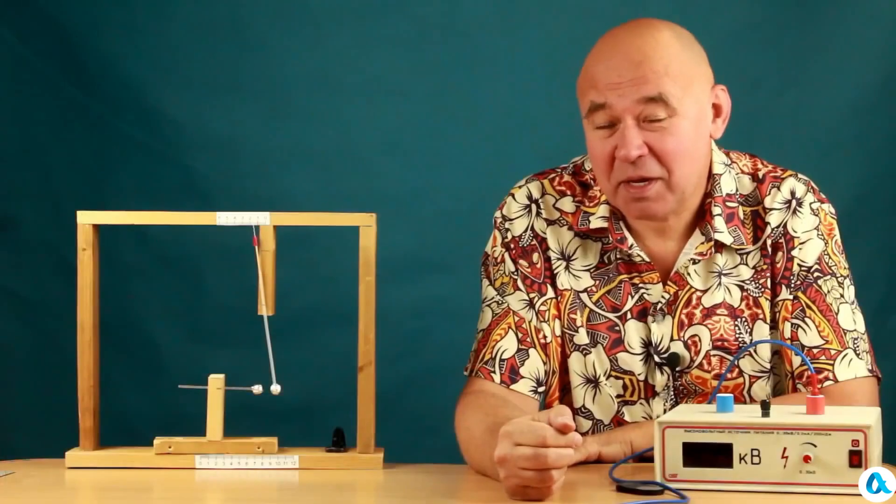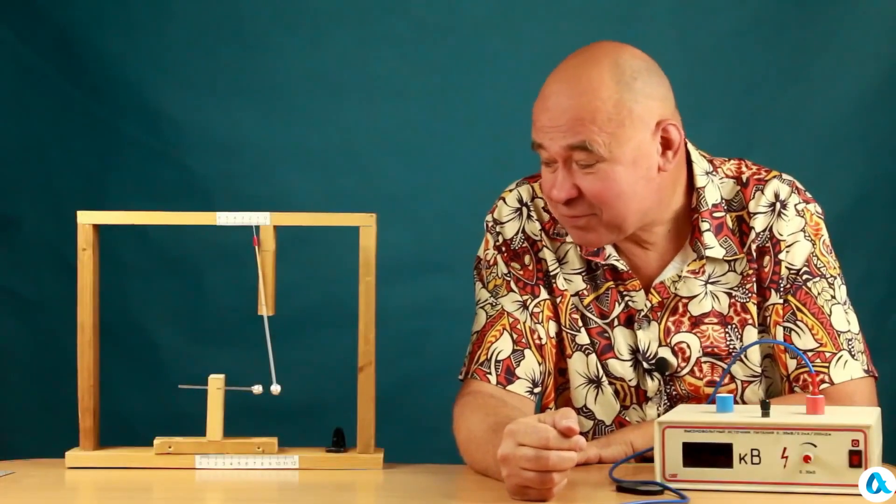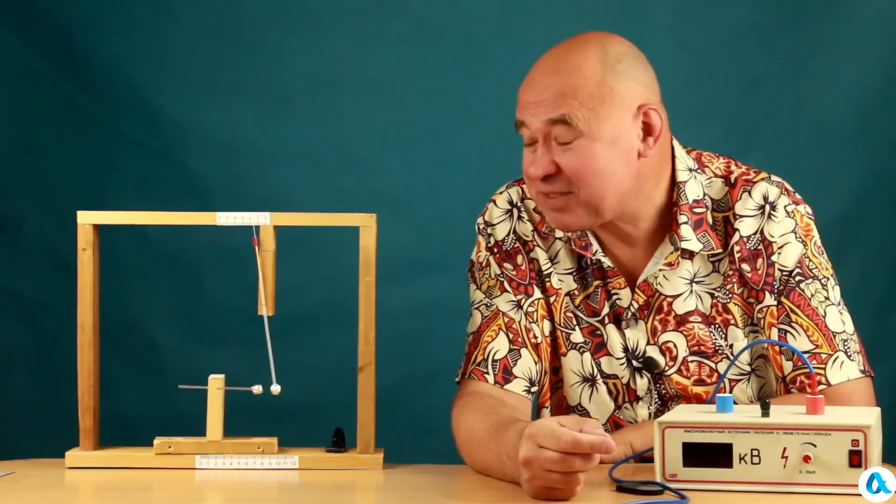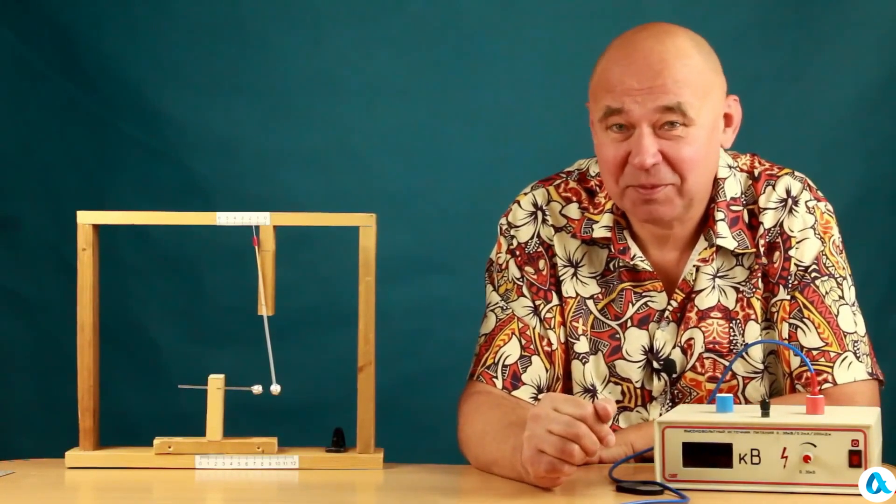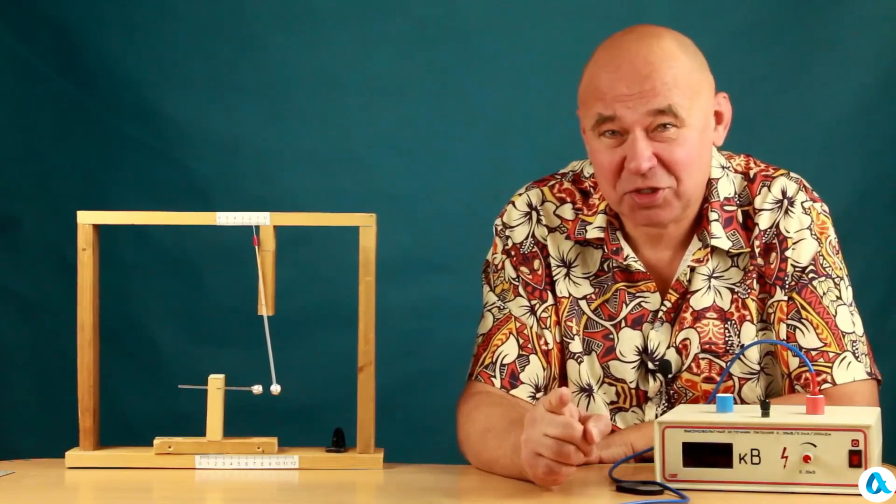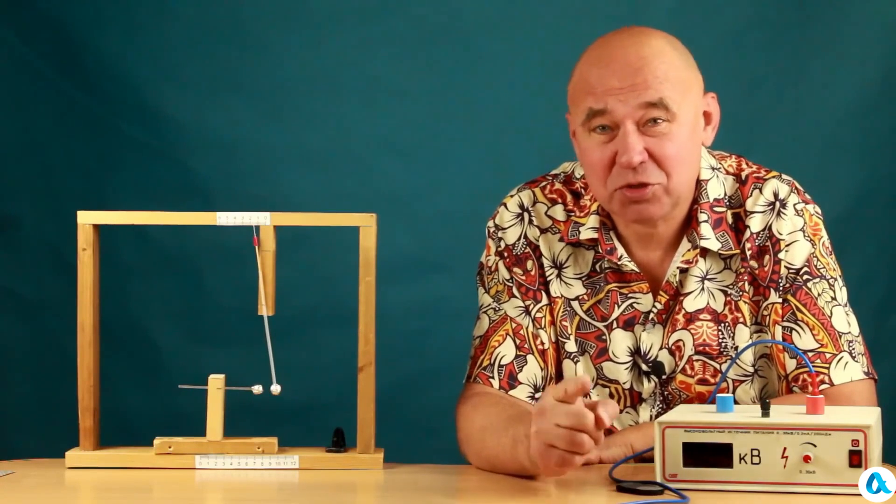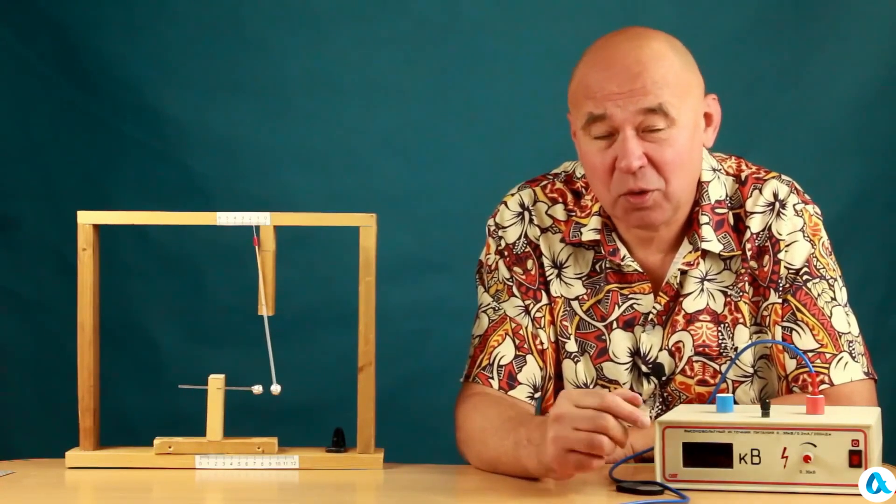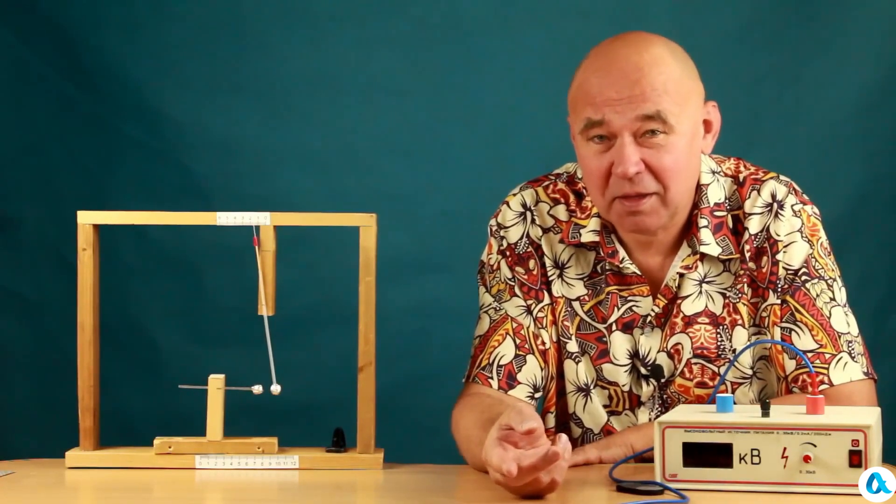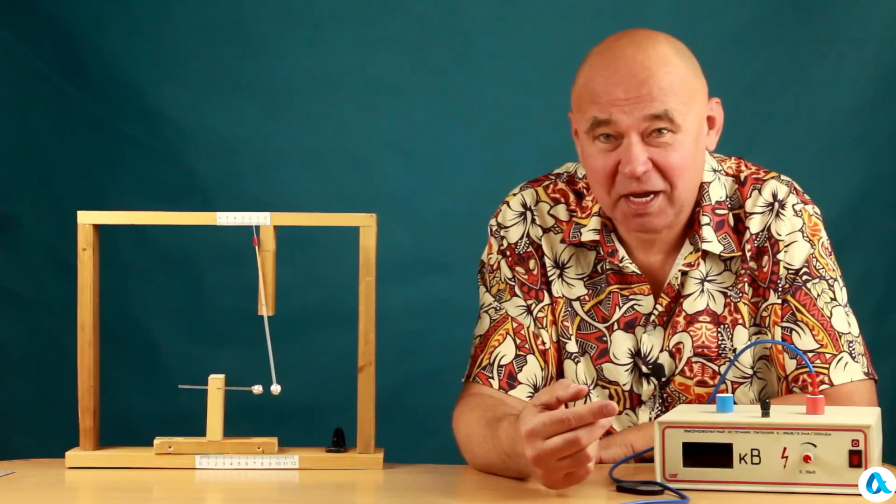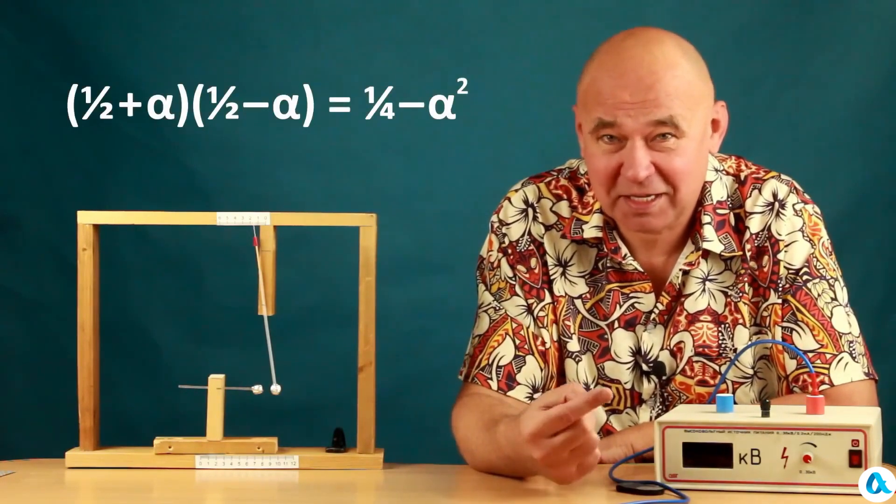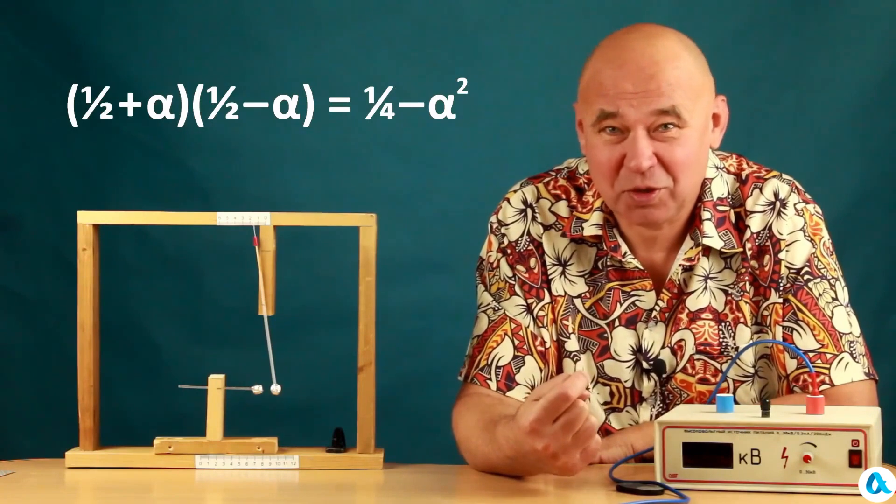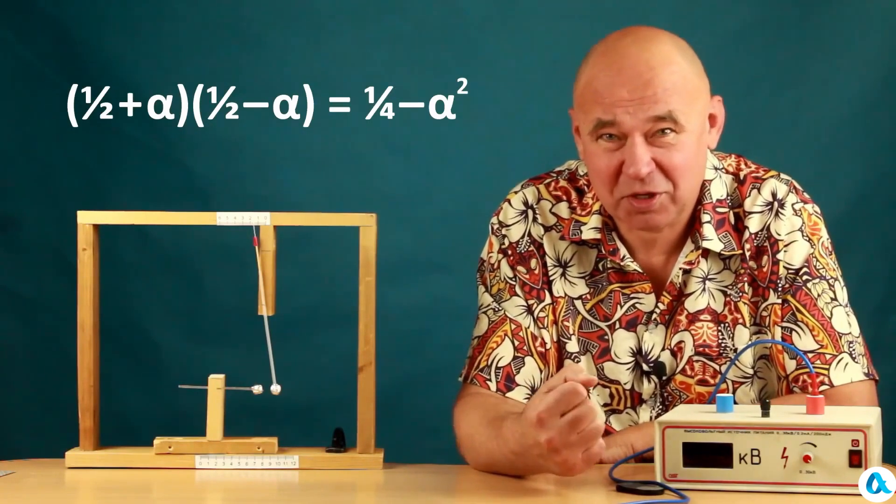And it seems I even understand what the issue is. The spheres I have are made quite roughly and they are not identical only approximately so. And this means that the charge between them was not distributed exactly equally. One has slightly more than half and the other slightly less than half. And then the product of such factors is less than one quarter, which is what we observed in this experiment.